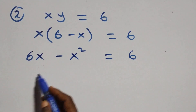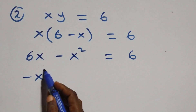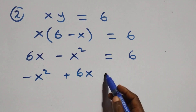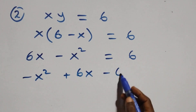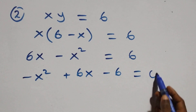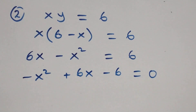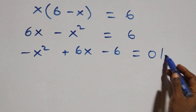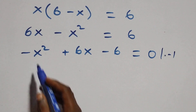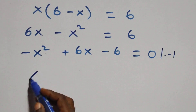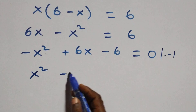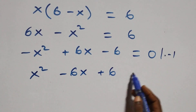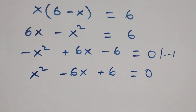We rearrange to get minus x squared plus six x minus six equals zero. Multiplying through by minus one, this becomes x squared minus six x plus six equals zero.